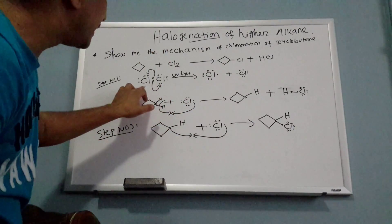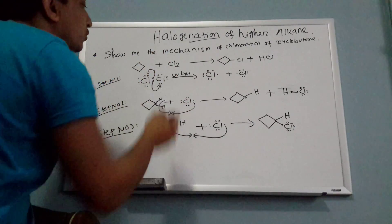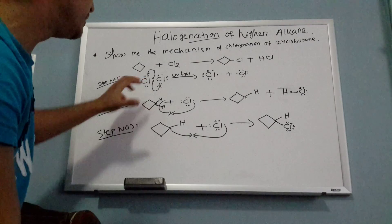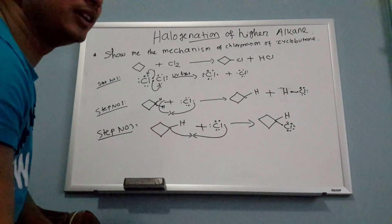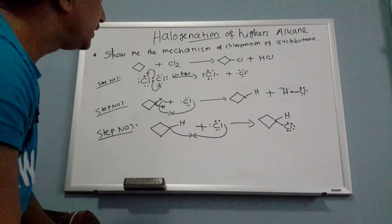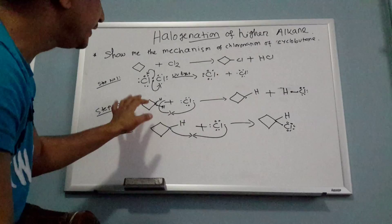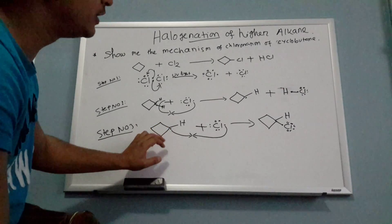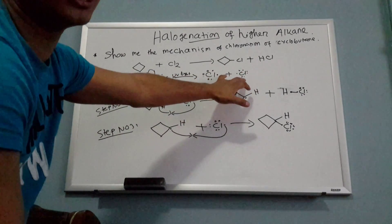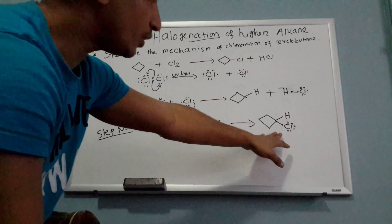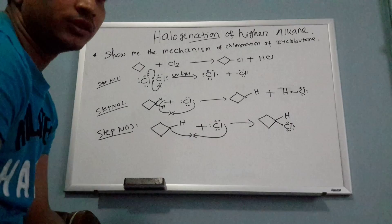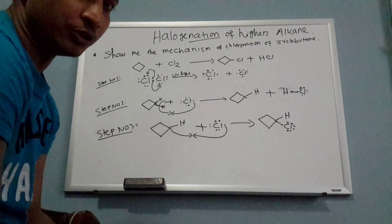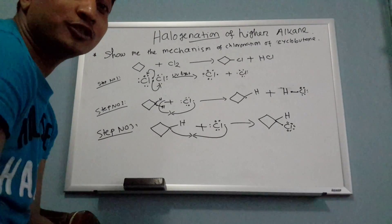So this is the three-step mechanism. Step one: use UV light to break down Cl₂ into radicals — initiation. The alkane can be anything: 2-methylpentane, cyclohexane, cyclobutane. Step two: the alkane reacts with one Cl radical to form a free alkyl radical. Step three: the alkyl radical reacts with another Cl radical to form chlorocyclobutane — the final product.